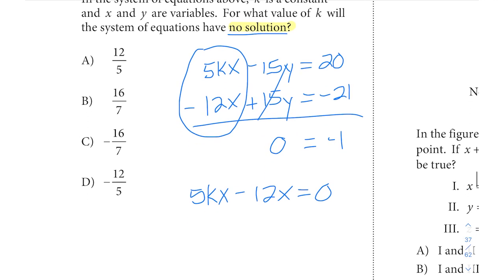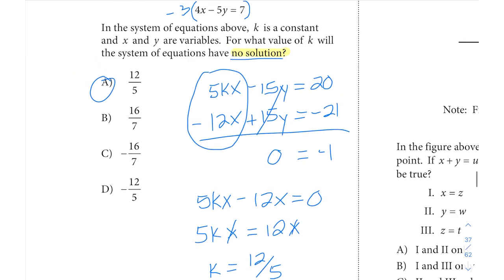To use that we can write this out as 5kx minus 12x equals zero, and we can solve from there. If you bring the 12x to the other side you get 5kx equals 12x. You can divide by x, those x terms cancel, you have 5k equals 12, and you can divide both sides by 5 giving you 12 over 5 for k, which is answer choice A.